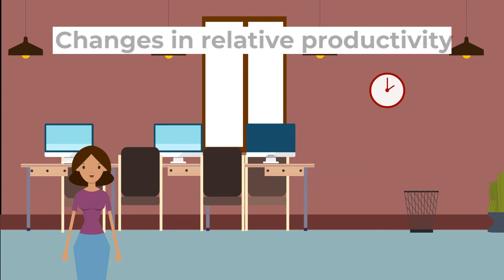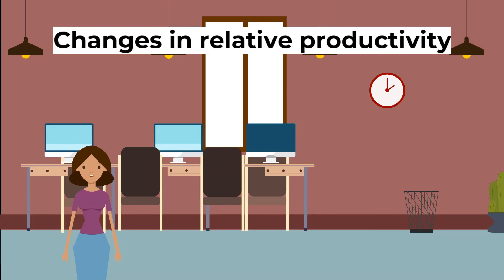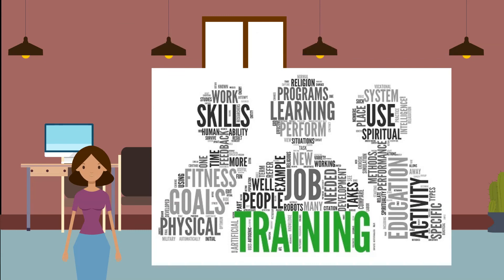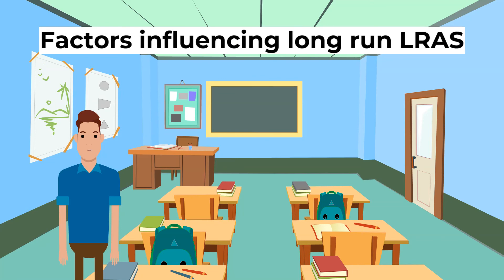Second, changes in relative productivity: the more productive the economy is, the more will be produced with given resources. Productivity depends on factors such as efficiency, the skill of labour, and technology. If the UK is more productive than other countries, it will encourage investment in that production, increasing long-run aggregate supply. Third, changes in education and skills: a more skilled workforce will be more employable and work more efficiently, increasing output per worker and shifting long-run aggregate supply to the right. Education can also improve occupational mobility of labour, decreasing structural unemployment and ensuring all resources are used efficiently.